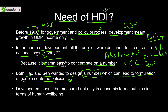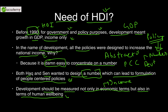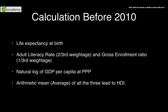Both Haq and Sen wanted to design a number to represent development. Sen was in favor of multiple numbers, but Haq finally convinced him to develop a single number that could lead to the formulation of people-centered policies. Development should be measured not only in economic terms — economic terms are important for income purposes — but also in terms of human well-being. That is why there is a need for HDI.